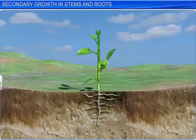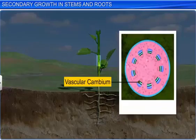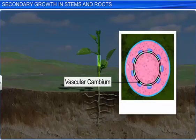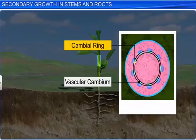When the stem is young, the vascular cambium is present as a patchy single layer. However, in the later stages, it develops into a complete ring, also known as the cambium ring. Let's understand how this ring is formed.